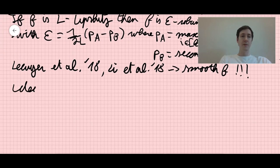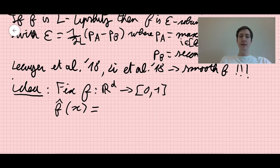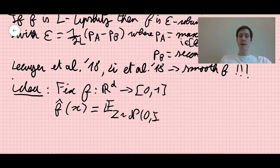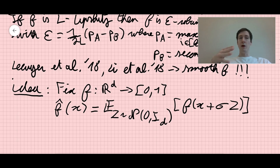So the idea: we're going to fix F, our neural network, and consider just one class likelihood. So F is a function from R^d to [0,1], and we cannot assume any Lipschitz property about it. What we're going to do is look at the transform f̂(x), a convolution with a Gaussian — meaning you take the expectation when you sample a standard Gaussian z (with identity covariance) of f(x + σz), where σ is some standard deviation you can fix. In practice, you add noise to your image many times, look at the outputs, average them, and that gives you the new likelihood.